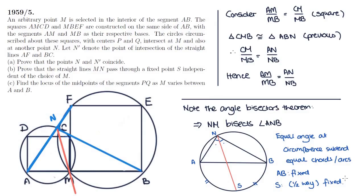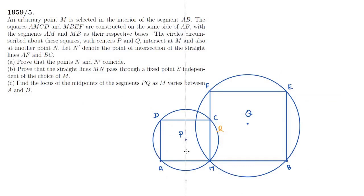And we're done for part B. Part C asks us to find the locus of the midpoints of the segment PQ as M moves along AB. Let's let R be the midpoint of PQ, because M is already taken. Let's let the perpendicular distance of P to AB be D1, of Q to AB be D2, and of R to AB be D3.